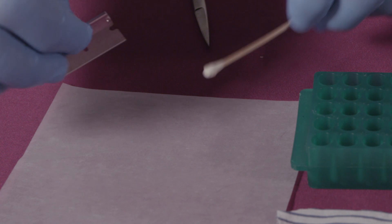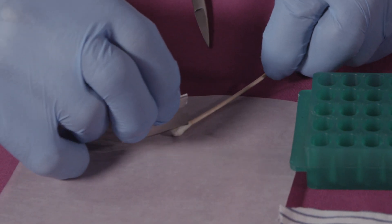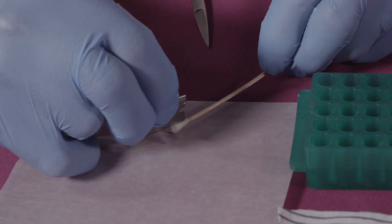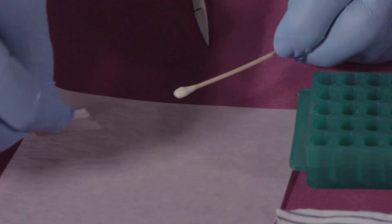If analyzing a body swab, slice longitudinally one quarter from the swab using a scalpel or razor blade and place inside a clean microfuge tube and label.